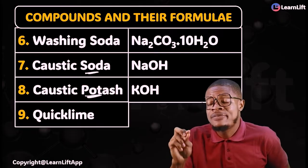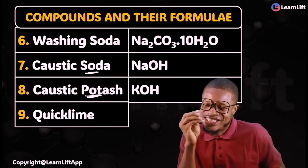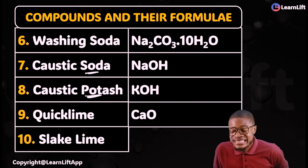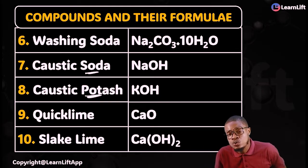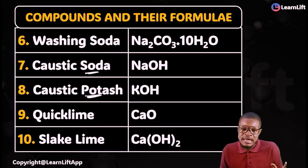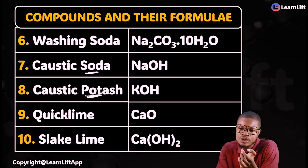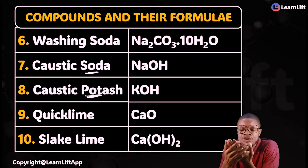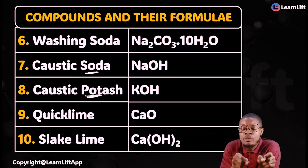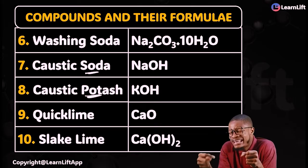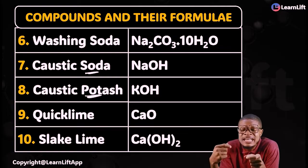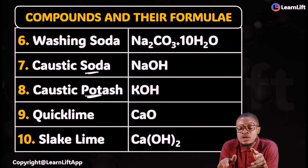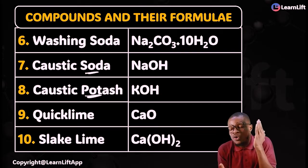Number 9 is quicklime. The formula is short — that's why it's quick. Quicklime is CaO — calcium oxide. Number 10 is slaked lime. Slaked lime is calcium hydroxide: Ca(OH)₂. So to recap: washing soda is Na₂CO₃·10H₂O, caustic soda is NaOH, caustic potash is KOH, quicklime is CaO, slaked lime is Ca(OH)₂.